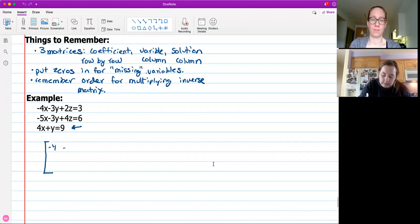We're just taking all those coefficients and we're just putting them into a matrix. We're not changing the order. We're not doing anything to them. We have negative four, negative three, two, negative five, negative three, four, four, one. And then because we don't have a z there, we're going to put in a zero. That would be one of our missing variables.